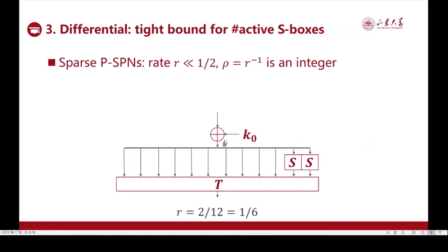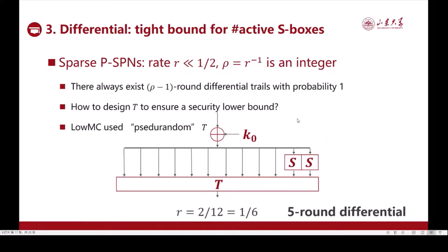For our last result, we consider sparse PSPNs with rates much smaller than 1 divided by 2. This sort of parameter is indeed used in LowMC and Hades. For simplicity, we assume the reciprocal of r is an integral rho. For example, in this figure, we have 12 chunks, but only 2 have S-boxes. So the rate is 1 divided by 6, and the reciprocal rho equals 6. A folklore here is that there always exists rho minus 1 round differential trails with probability 1, because the trail could just avoid having active S-boxes in the rounds. For example, this example has 5 round differential trails with probability 1.